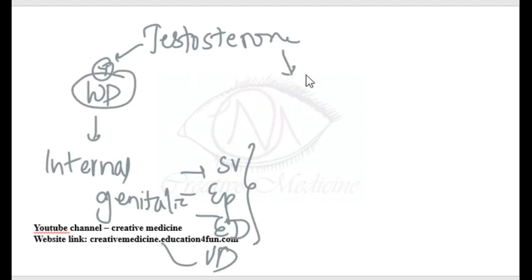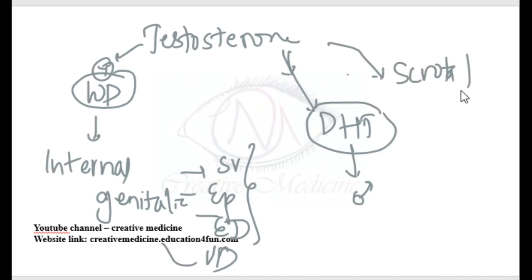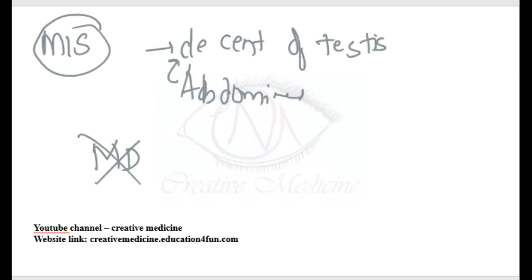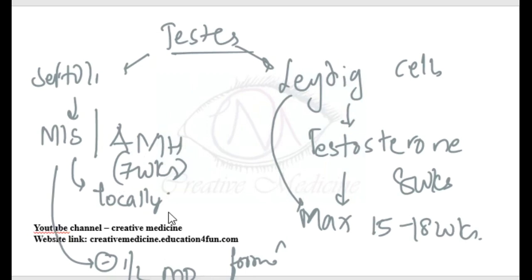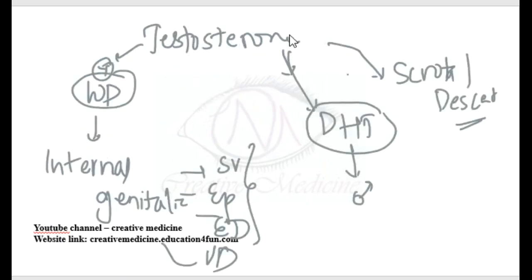Testosterone gets converted to dihydrotestosterone (DHT), which forms the male external genitalia. Testosterone is also responsible for the scrotal descent of the testis. In summary, Müllerian Inhibiting Substance causes ipsilateral Müllerian duct inhibition and abdominal descent of the testis, while scrotal descent is caused by testosterone.